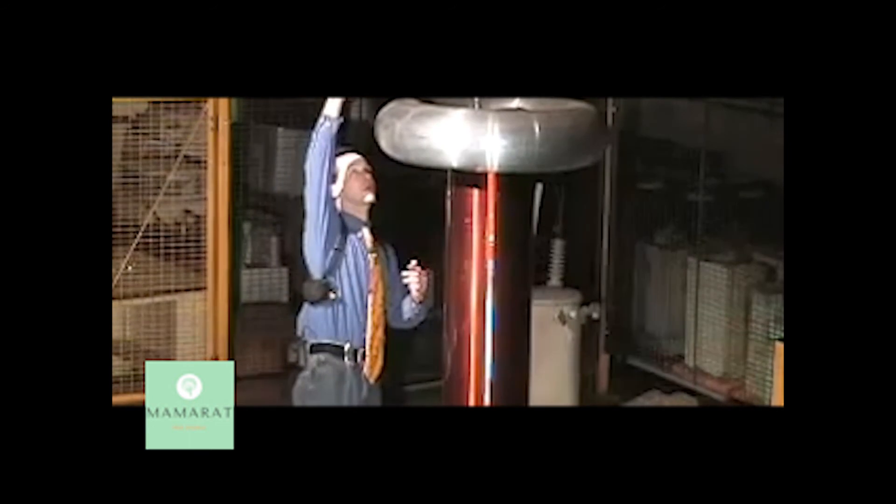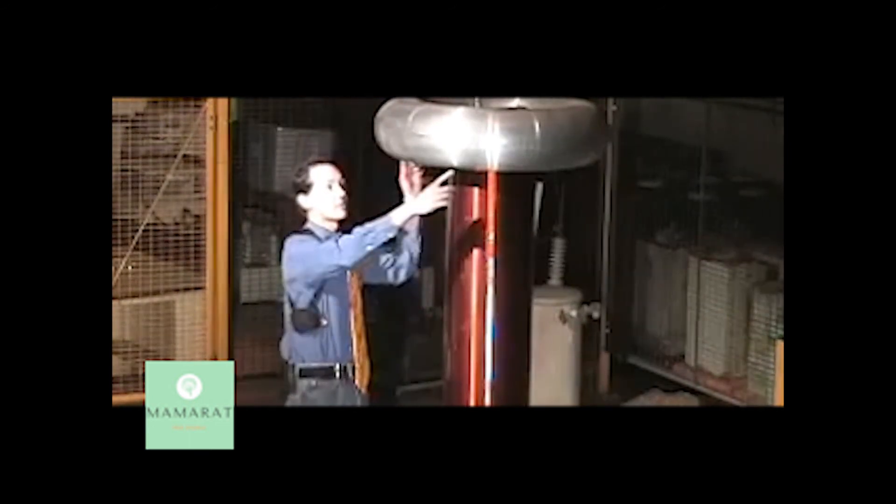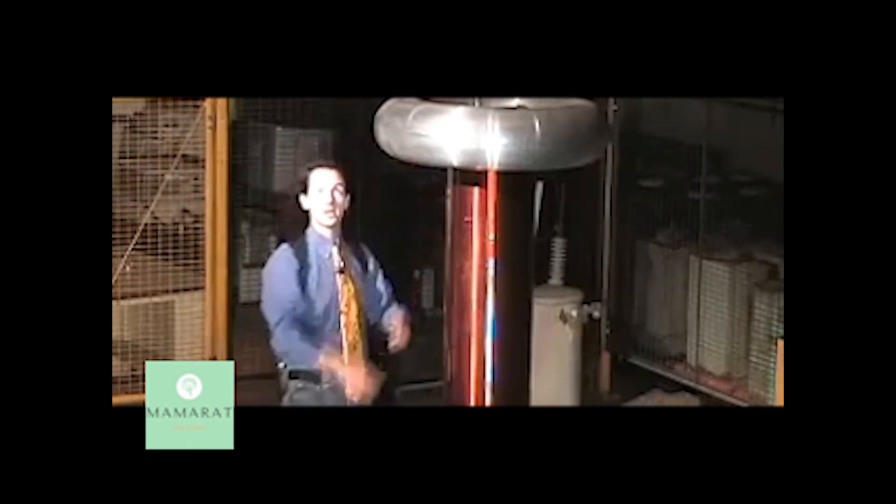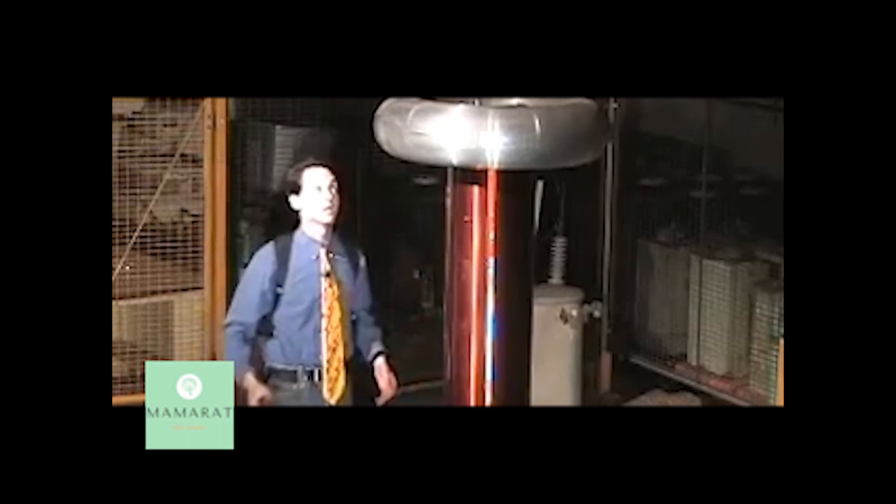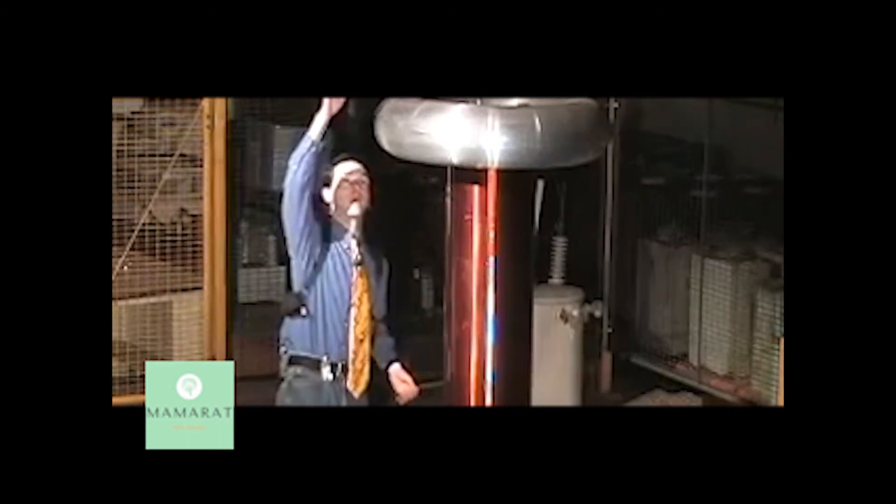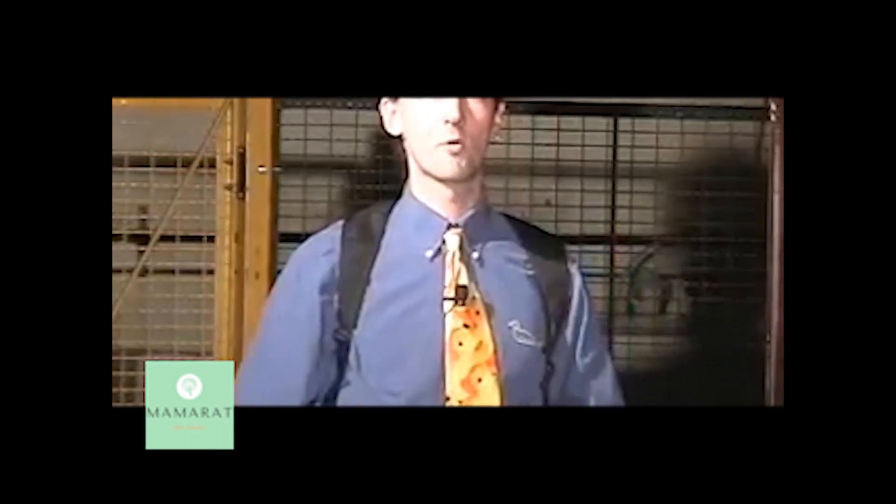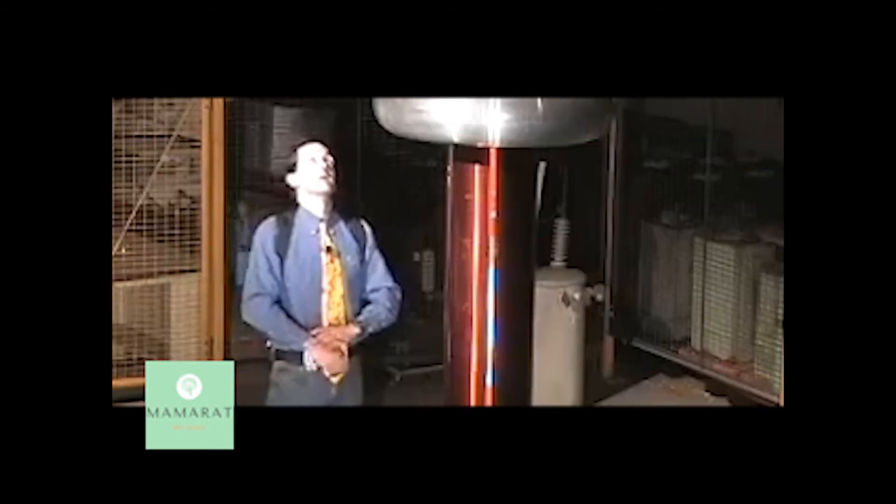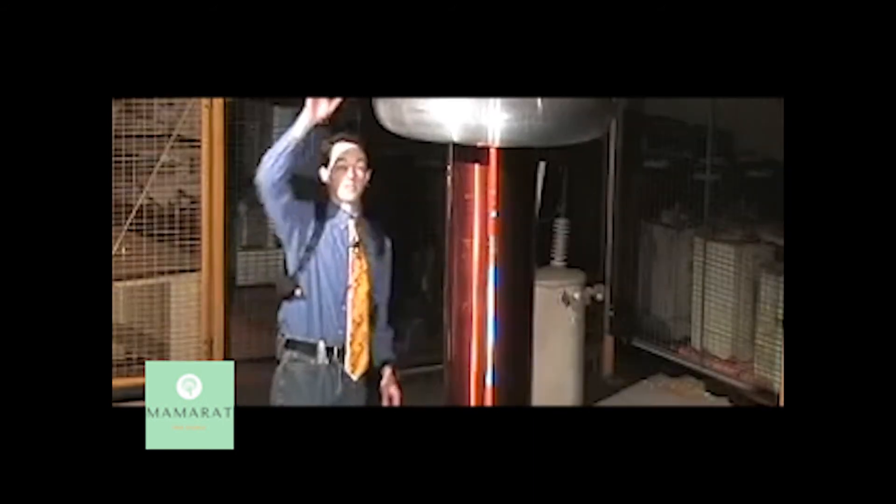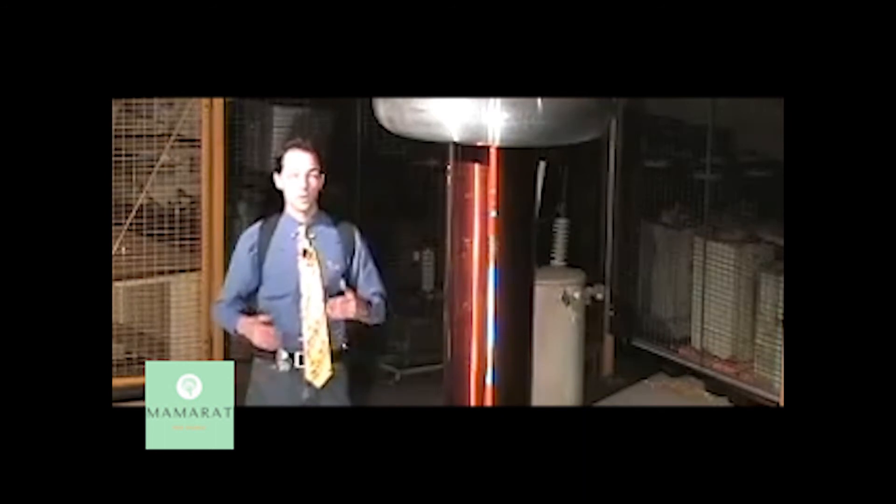Without this, the Tesla coil will break out all over and the sparks will move around and they hit the cage and the floor and the ceiling and everything else. This allows us to have some small control over where the discharges go.